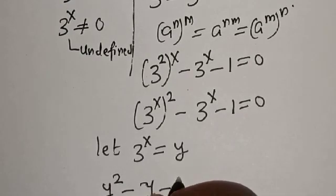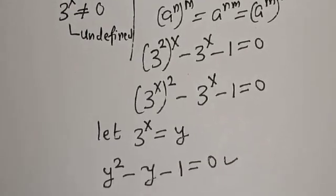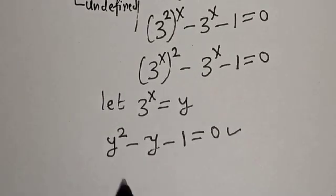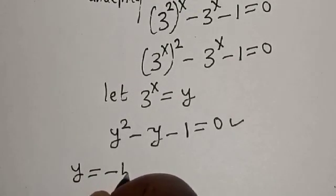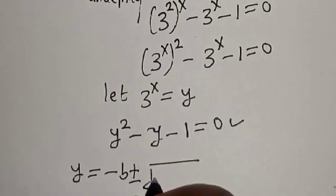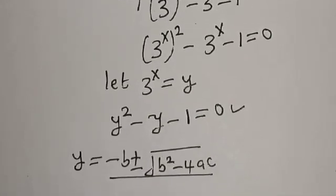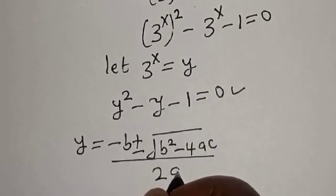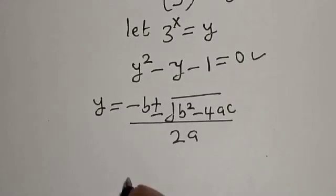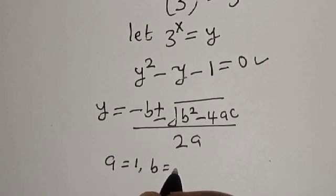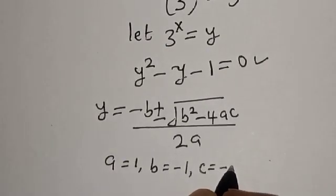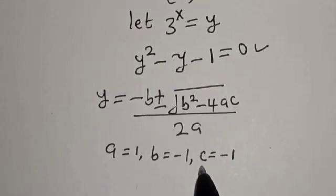Now let 3 raised to power x equal y. Then we have y squared minus y minus 1 is equal to 0. This is a quadratic equation which can be solved using the quadratic formula. Our quadratic formula gives y is equal to minus b plus or minus square root of b squared minus 4ac, divided by 2a. From the equation, a is equal to 1, b is equal to minus 1, c is equal to minus 1.